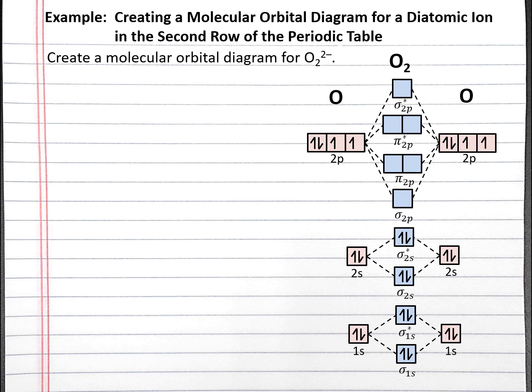Then we fill our sigma 2s bonding and antibonding molecular orbitals, and then the sigma 2p bonding molecular orbital. The two pi 2p bonding molecular orbitals are degenerate, meaning they have the same energy. When we fill degenerate orbitals, we fill them with one electron in each orbital first, and those electrons have parallel spins before we double up. We have two electrons left to add, so we have one electron each in the pi 2p antibonding molecular orbitals.